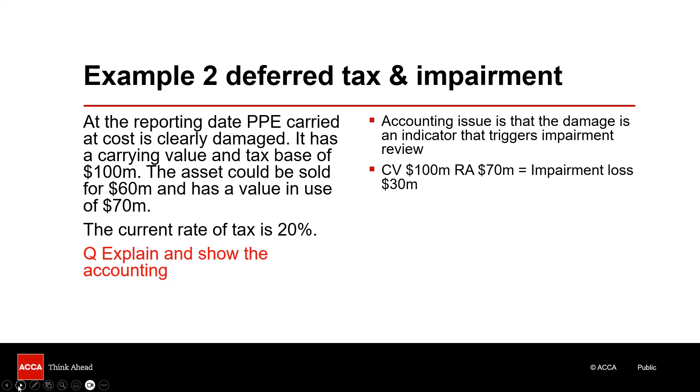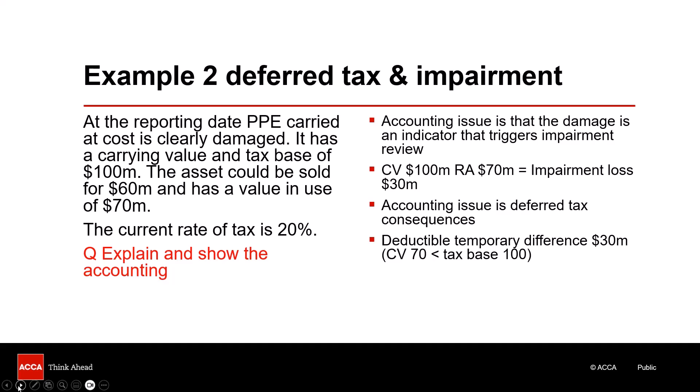You're not going to get tax relief on impairment losses. So you're writing down the carrying value of the asset, but the tax base of the asset still remains at 100. This 30 throws up a temporary difference — a deductible temporary difference, because when you're dealing with losses you're dealing with deductible temporary differences and deferred tax assets. With a deductible temporary difference of 30 and a tax rate of 20%, the carrying value is smaller than the tax base, giving a deferred tax asset of 6. I hope you beat me to the punchline.